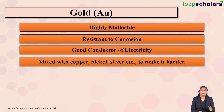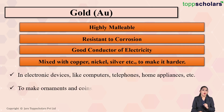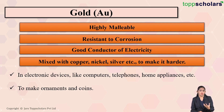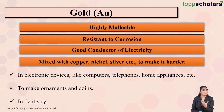Due to these properties, gold has numerous uses. Gold is used in electronic devices — in the manufacture of computers, telephones, and home appliances. Gold is used to make ornaments and coins, generally in alloy form. Gold is also used in dentistry to fill cavities in teeth, mixed with other metals in the form of an alloy.